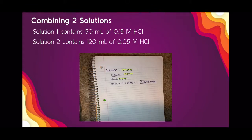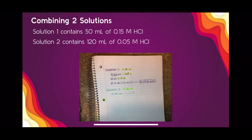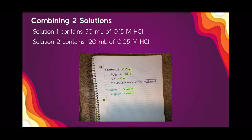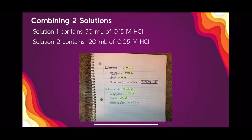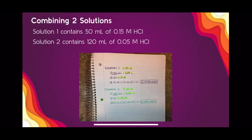I'm going to do those exact same steps for solution two. Converting 120 milliliters by moving the decimal three places gives a total volume of 0.12 liters for solution two. The molarity is 0.05 molar, so multiplying those together gives the moles of solute in solution two, which is 0.006 moles.